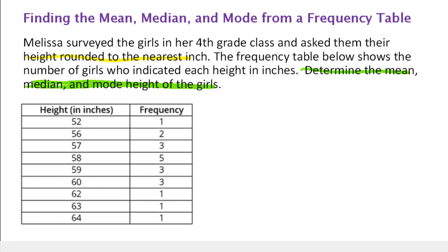Let's look at the frequency table and try to gain an understanding of it. Here we have the height in inches, and the frequency tells us how many of the girls were that corresponding height. Frequency tables are useful because a lot of times you don't want to list all of the values. If we were to list all of these values, there'd be 1 fifty-two, 2 fifty-sixes, 3 fifty-sevens, and so on.